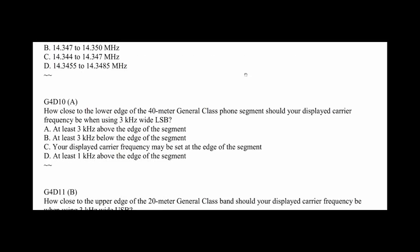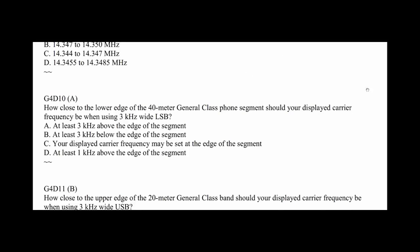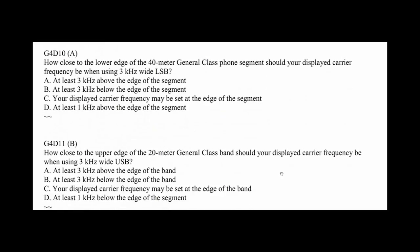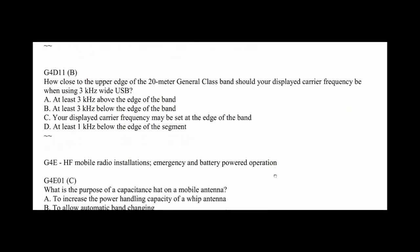G4D08: What frequency range is occupied by a 3 kilohertz lower sideband signal when the displayed carrier frequency is set to 7.178? Well, it's lower sideband and it's 3 kilohertz, so take away three from there and you've got 7.175. So the answer is C, 7.175 to 7.178. G4D09: What frequency range is occupied by a 3 kilohertz upper sideband signal with a display carrier frequency of 14.347? Well, okay, it goes up, so we add three, so it's 14.350. The answer is B, 14.347. By the way, part of the answer is right here - it says the start is 14.347. Going through these again, it narrows it down to two. This one's a 300 change, this one's a 3 kilohertz change, so obviously it's B. G4D10: How close to the lower edge of the 40 meter general class phone segment should your displayed carrier frequency be when using 3 kilohertz wide lower sideband? Well, the answer is right there - you don't want to be, you want to be at least 3 kilohertz away from the edge. So the answer is A, at least 3 kilohertz above the edge of the segment.